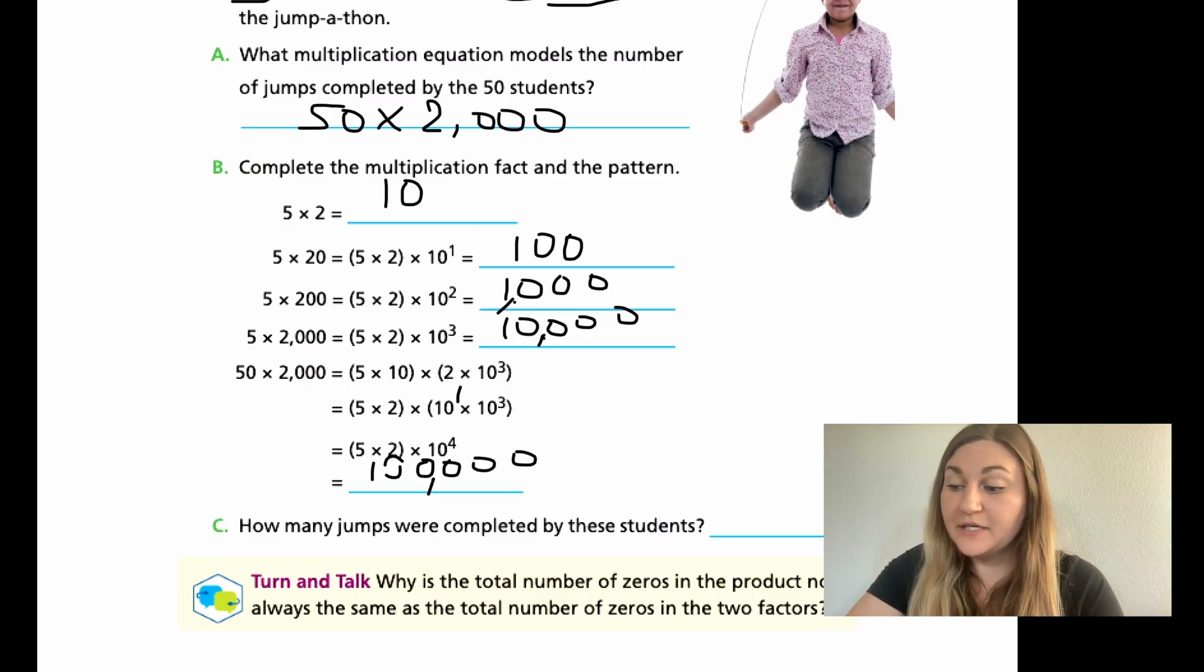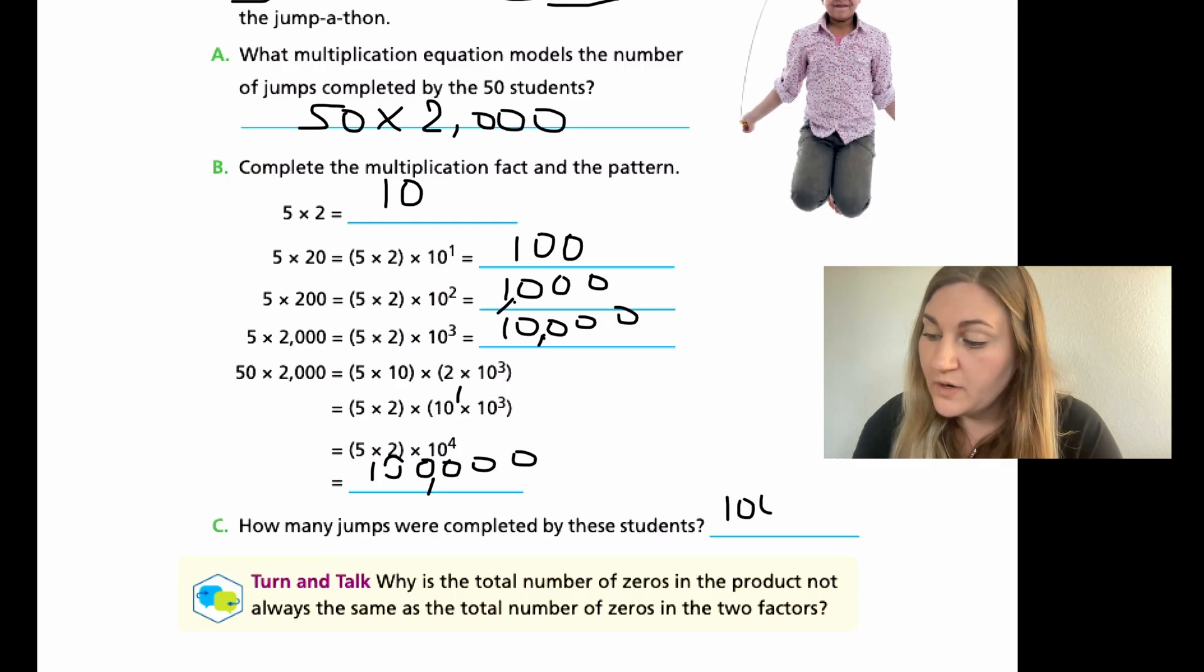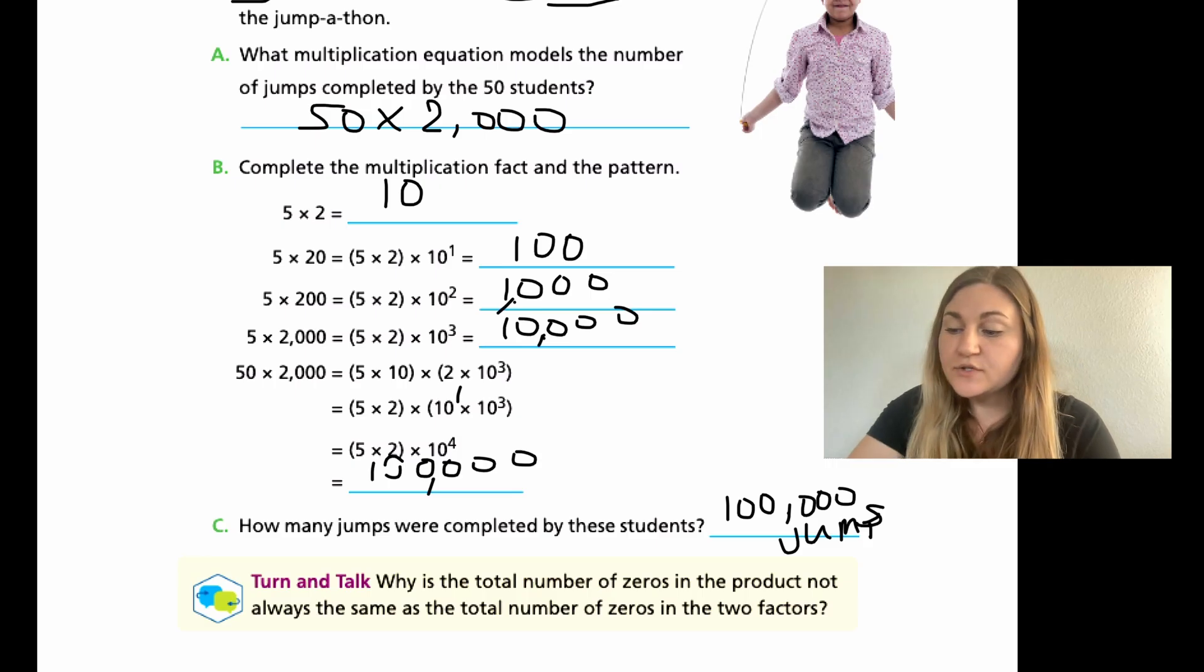That question, how many jumps were completed? 100,000 jumps. Turn and talk. Why is the total number of zeros in the product not always the same as the total number of zeros in the two factors? It's because 5 times 2 in this problem is 10. So there is going to be an extra zero. Just try to be careful about that.